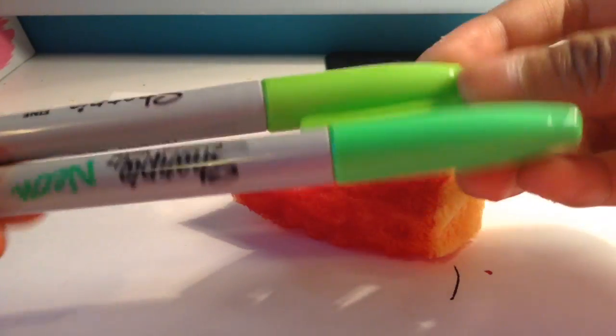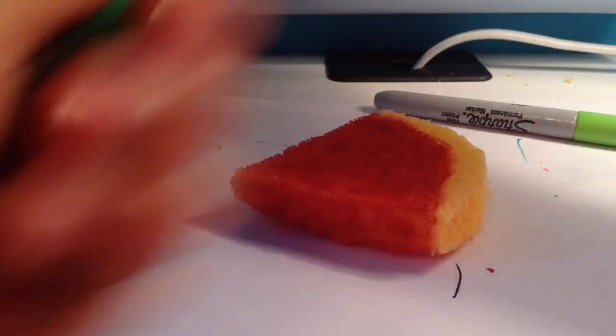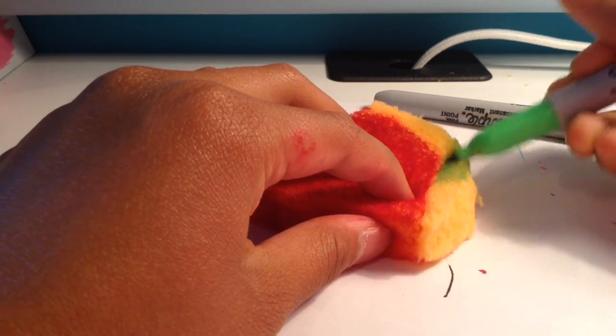Once you're done with that and everything is colored in, this is what it should look like. And then I'm just going to take my green colors, and I am going to use neon green because I like it, and I'm just going to draw in the space that is yellow.